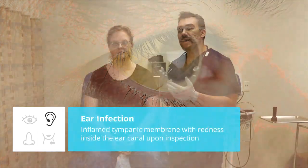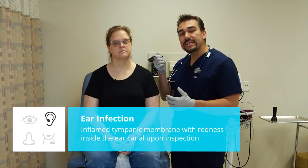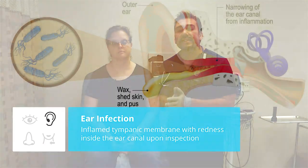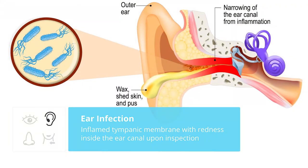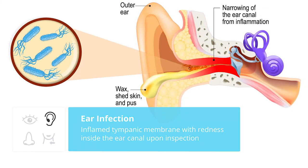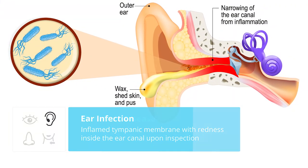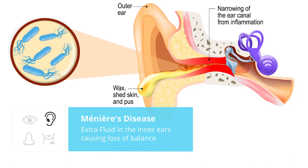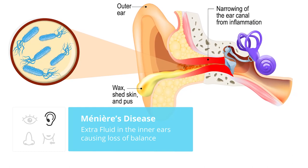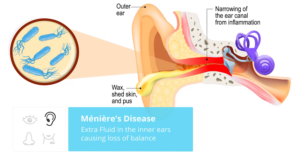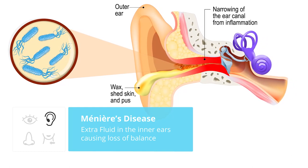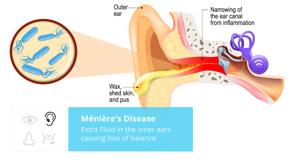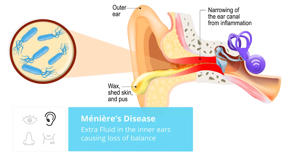Moving on to the ears — when we start looking inside the ears, one of the biggest things is an earache: redness inside the ear canal upon inspection. You also have a diagnosis of Meniere's disease, which is basically fluid inside the ear. You lose a little bit of balance because of the fluid in your ears.